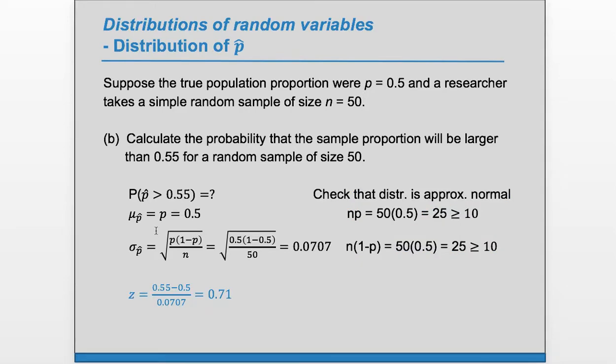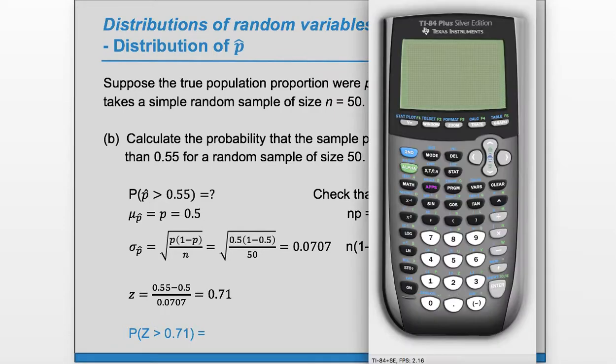So z is going to be the value of interest, which is this 0.55 minus our expected value or average, divided by the standard deviation. And that comes out to 0.71. It's coincidence that these two numbers are almost the same. So we have a z-score of 0.71, and we want the probability that the sample proportion will be larger. So we're going to look for the area to the right of this z-score under the normal curve.